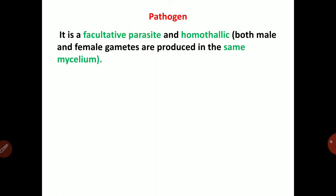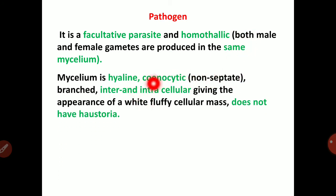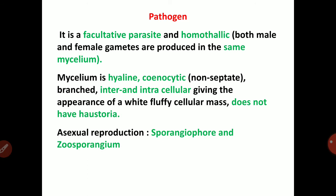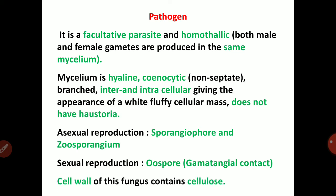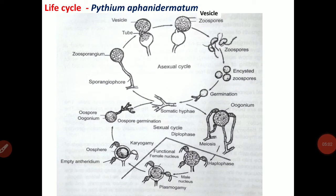The pathogen is Pythium aphanidermatum. It is a facultative parasite and homothalic, meaning both male and female gametes are produced in the same mycelium. The mycelium is hyaline and coenocytic, that is non-septate and branched, inter- and intracellular. It does not have haustoria; the mycelium itself absorbs the nutrients. The cell wall contains cellulose.